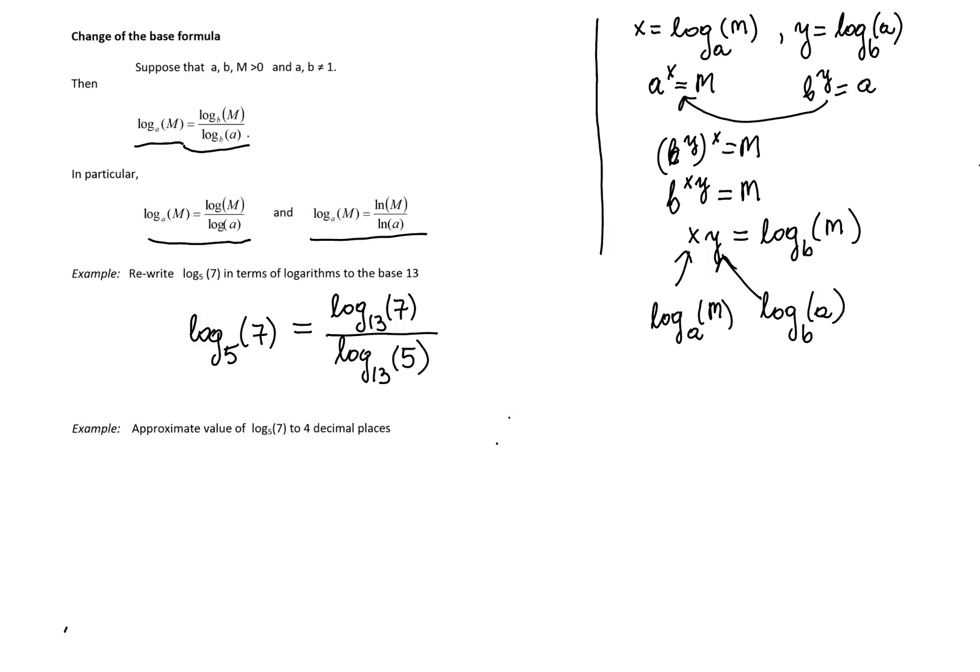In the second example, we are to approximate logarithm to the base 5 of 7. To do that, we'll use one of the logarithms that allow us to use the calculator. I will use ln of 7 over ln of 5. We can perform that operation on the calculator simultaneously without computing ln of 7 and ln of 5 separately. What we'll get is 1.2090619 and so on.